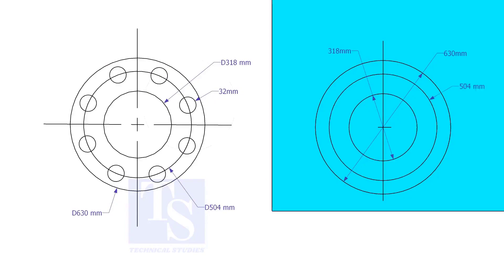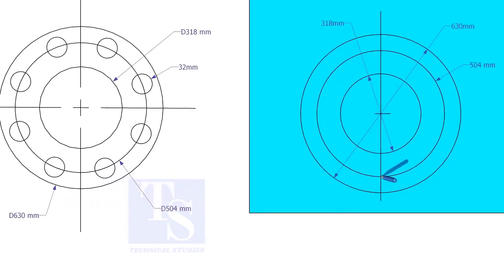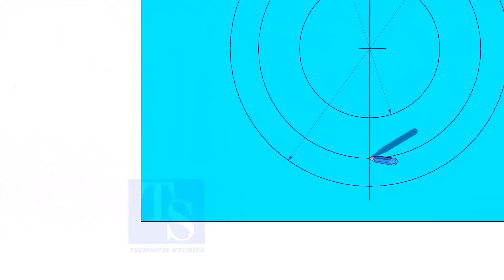Draw the OD and the ID circles. Draw the PCD. Punch mark where the PCD circle cuts the center line.